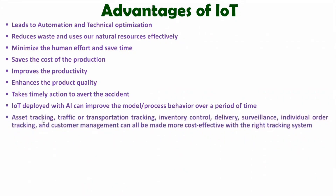You must have observed asset tracking in many applications. For example, if you order something from Amazon, you can track your assets. Asset tracking, traffic or transportation tracking, inventory control, delivery, surveillance, individual order tracking, and customer management can all be made more cost-effective with the right tracking system. If you order something from Amazon or Flipkart, you can track your order and the service provider can also track the product, making the system more cost-effective and providing users with a better and more satisfying experience.